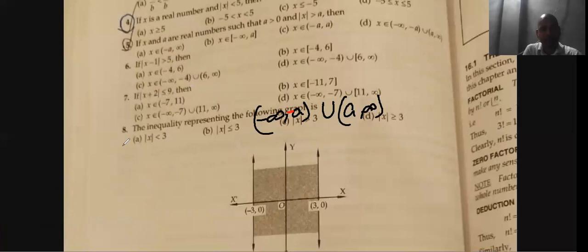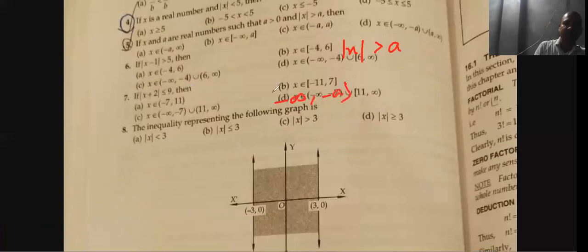Option check. Which option will become? Sir, D. Now, here we have a page that we have generalized about that. If you have mod x is greater than a, then the answer is minus infinity to minus a union a to infinity.